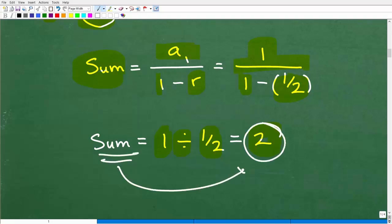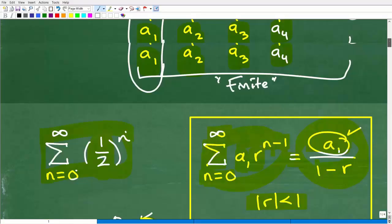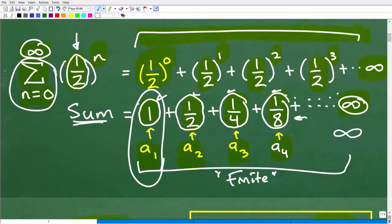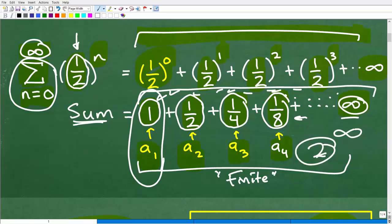The sum of this particular infinite geometric series is 2. In other words, if we kept going forever and ever to infinity and added up all these terms out to infinity, the answer would be 2.